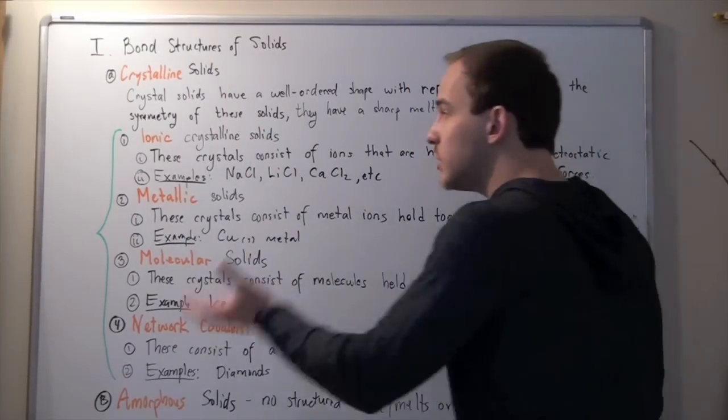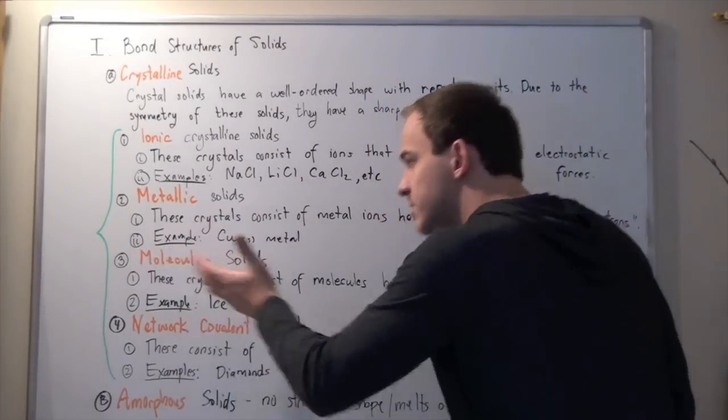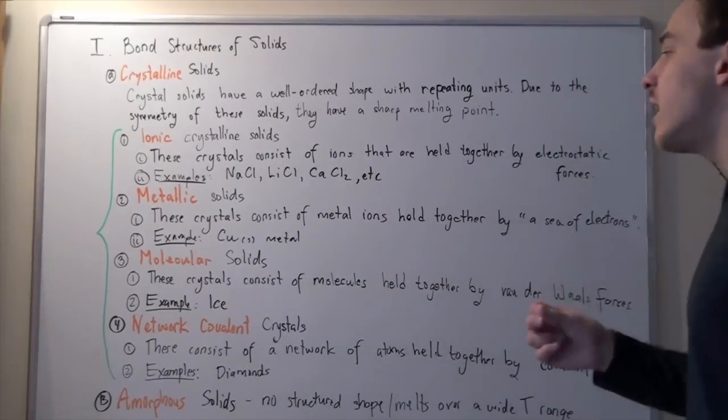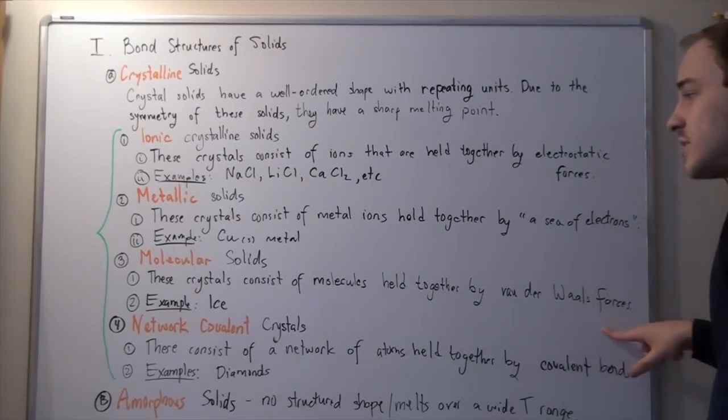Now let's look at the third type of crystalline solids, known as molecular solids. These crystalline solids consist of molecules held together by intermolecular forces called van der Waals forces.